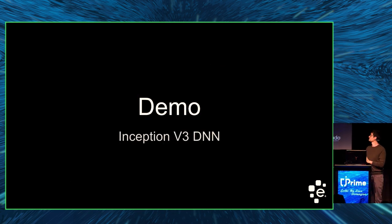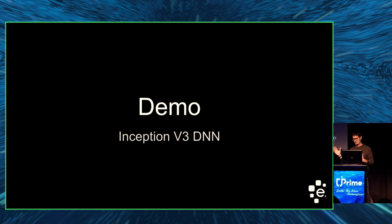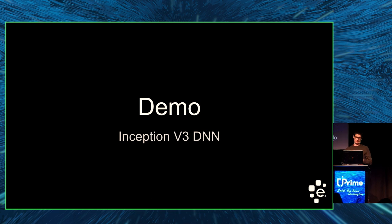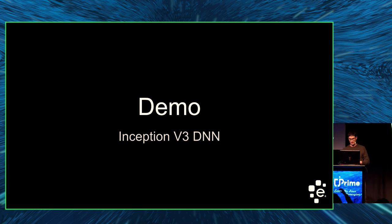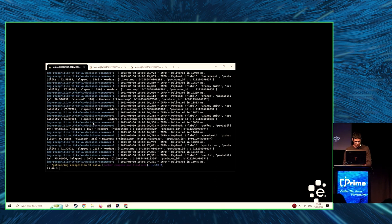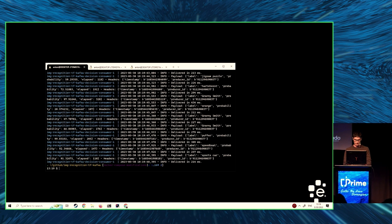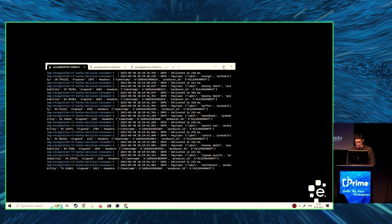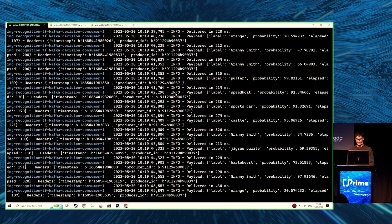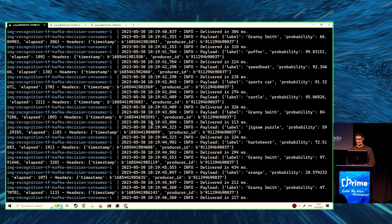I want to show a small demo. I'm going to use the Inception V3 ML model created and trained by Google, because I couldn't find a freely available Apple dataset, so I couldn't train my own ML model. Let me switch to see if it's running. This is my consumer that will actually resemble the sorting machine consumer.